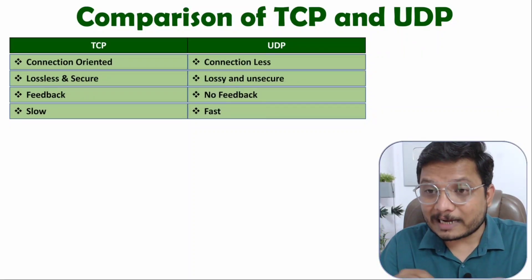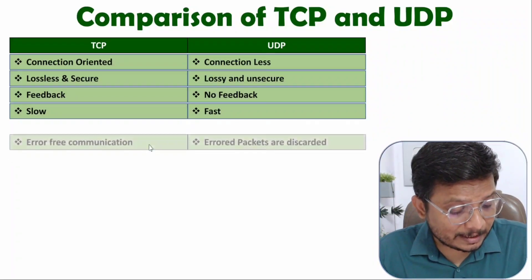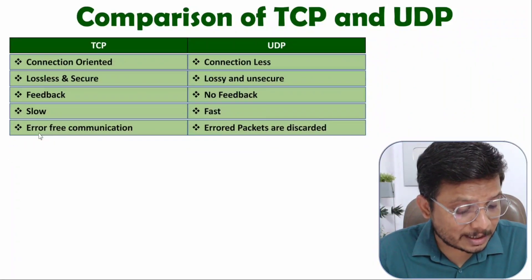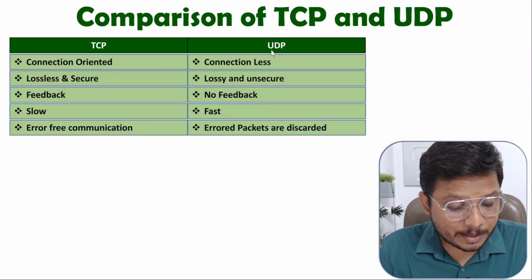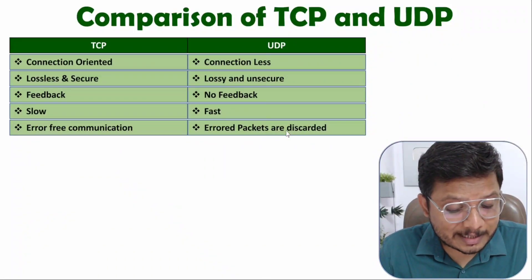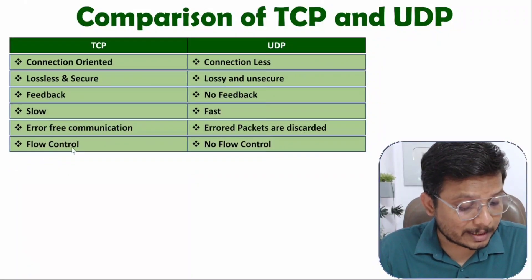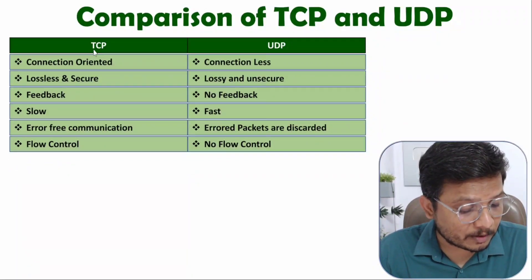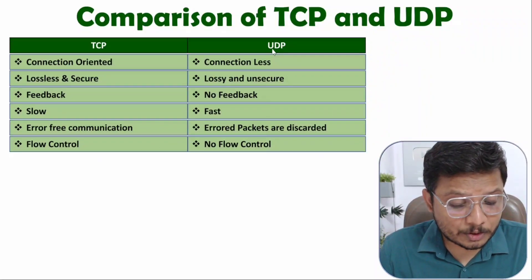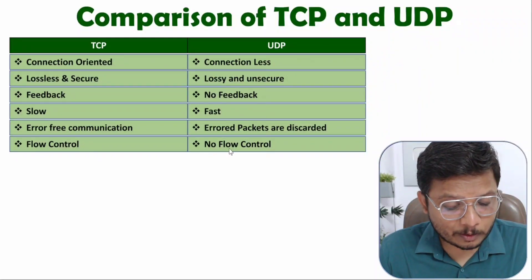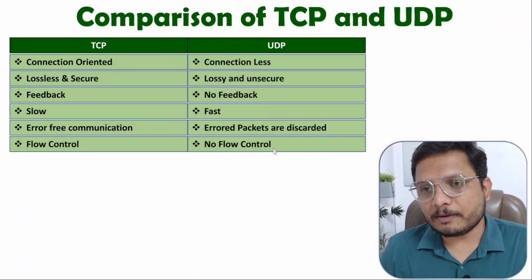When it comes to error handling, TCP provides error-free connection, while with UDP erroneous packets are simply discarded. When it comes to flow control, TCP performs flow control while UDP has no flow control. Let me explain what flow control means.